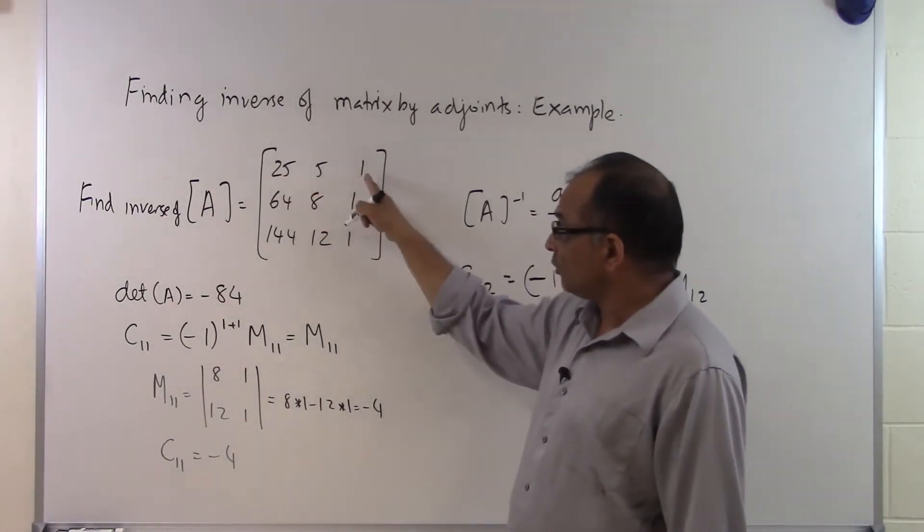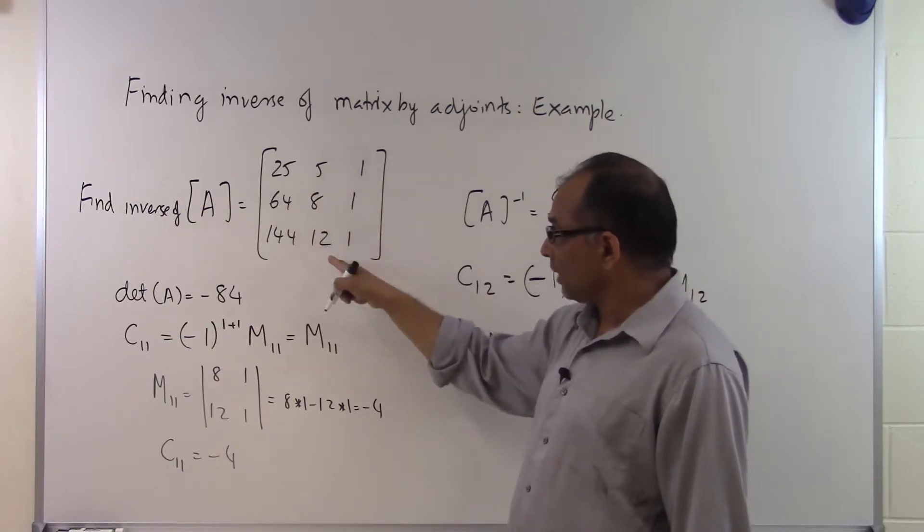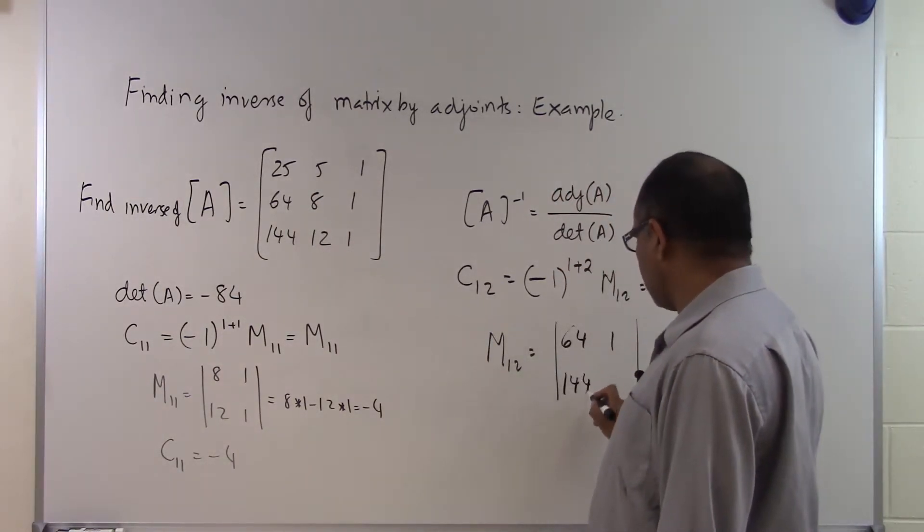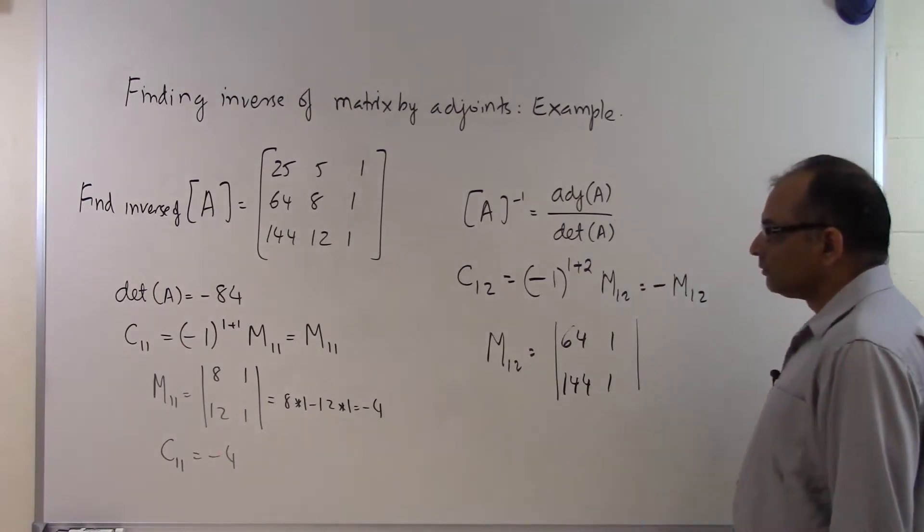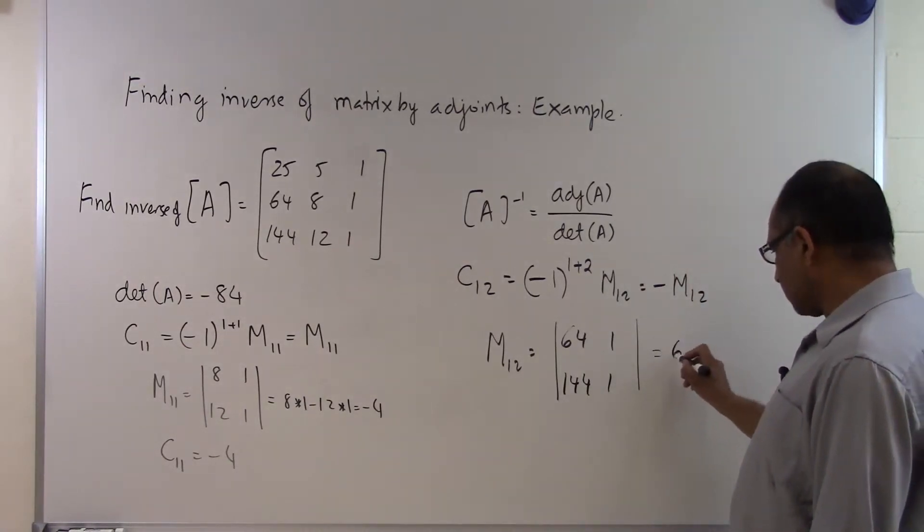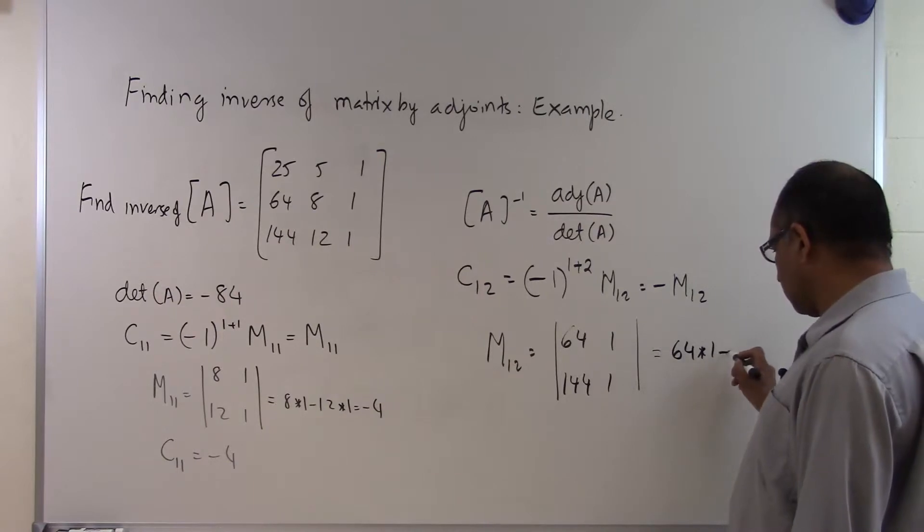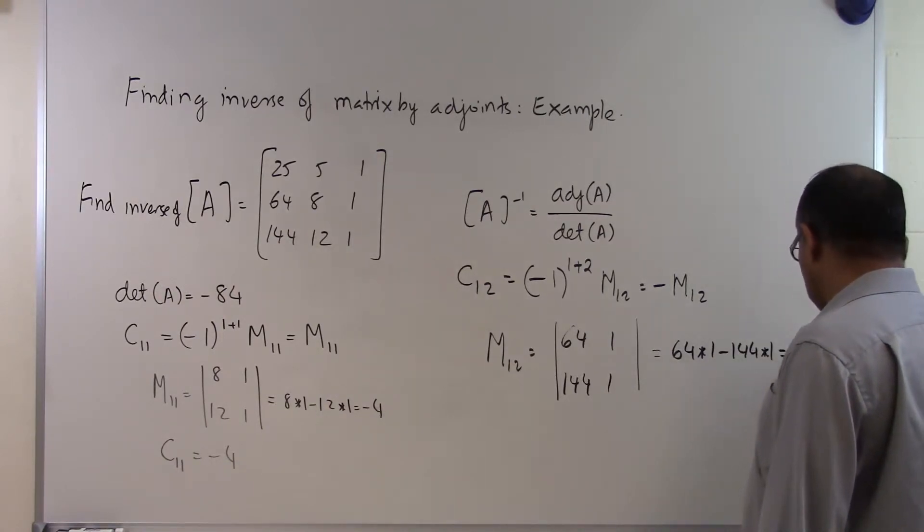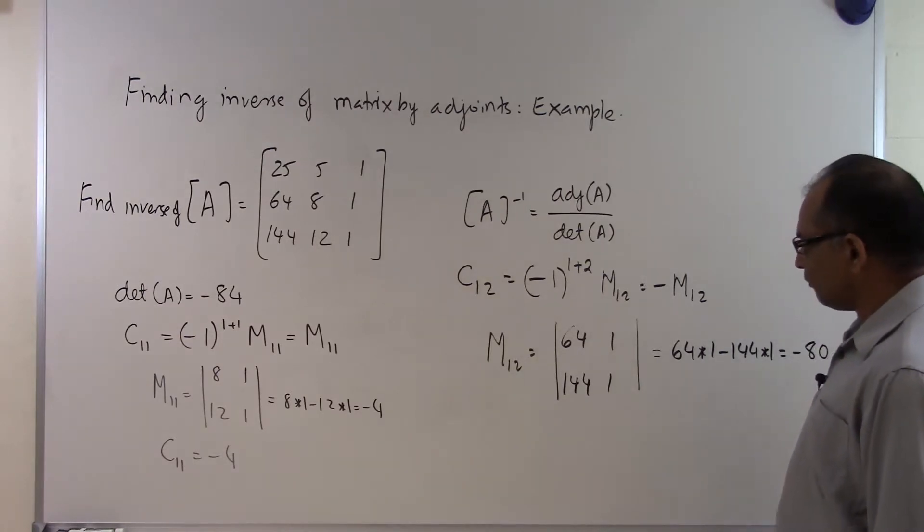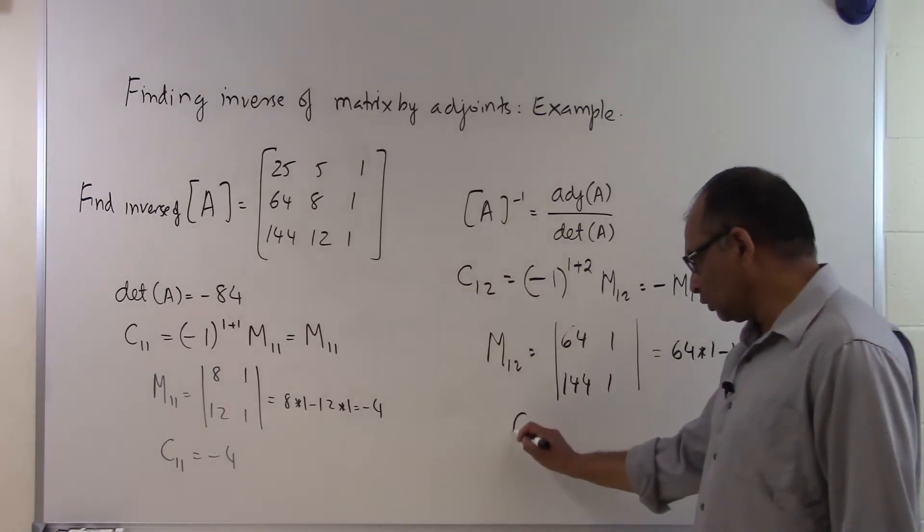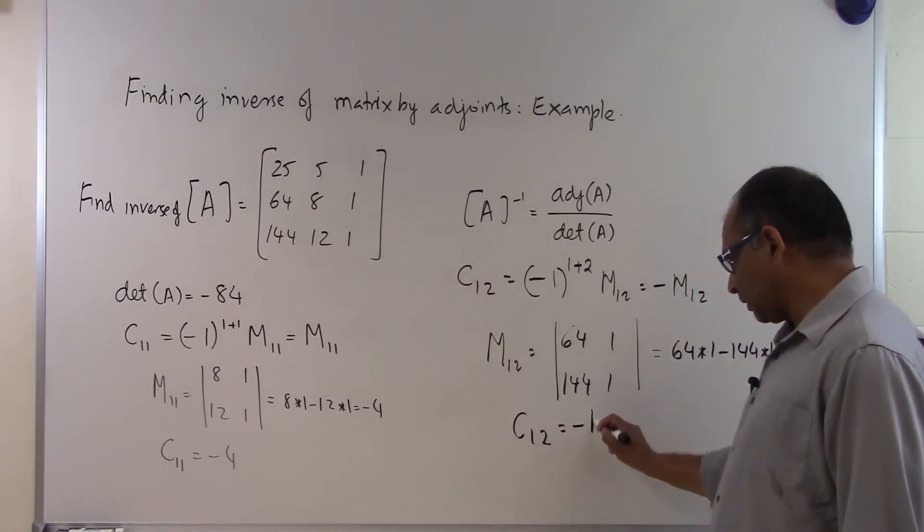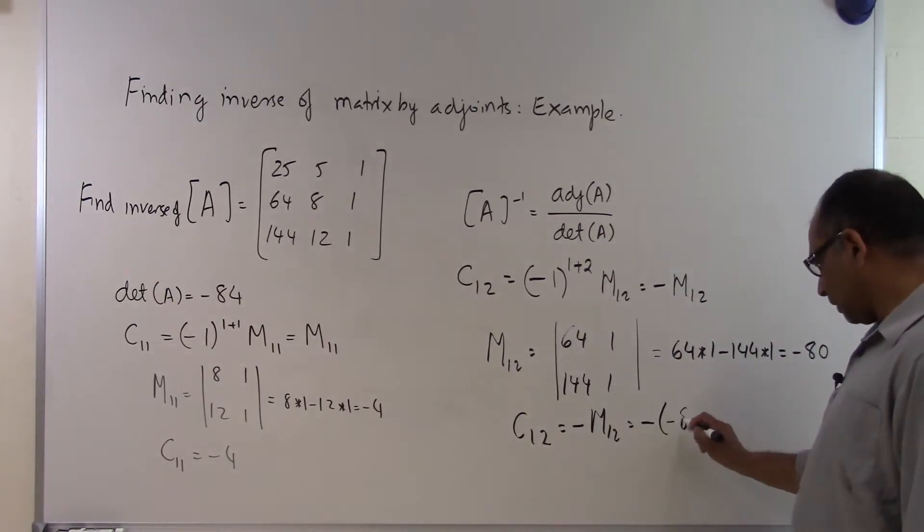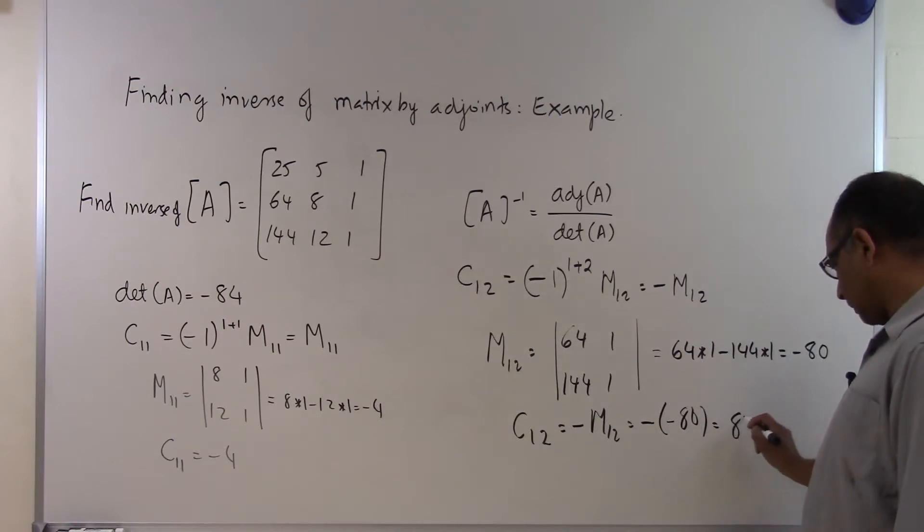If I take the first row out and the second column out, I'm left with 64, 1, 144, and 1. That's nothing but 64 times 1 minus 144 times 1 and that's minus 80. So M12 is minus 80. C12 is equal to minus M12 and since M12 is minus 80, C12 is turning out to be 80.